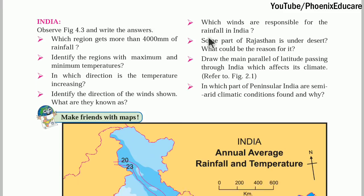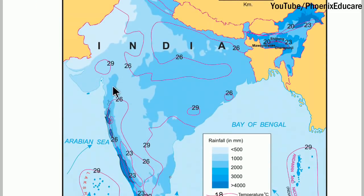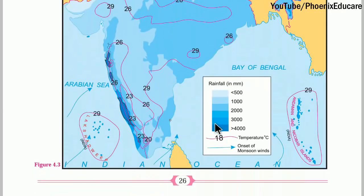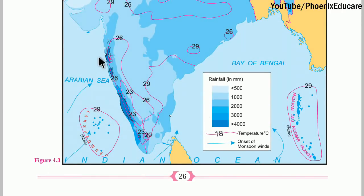If you see India, India is a peninsular region. Here we are having Bay of Bengal and here we are having Arabian Sea. India is getting rainfall from South-West monsoon winds. When the monsoon winds reach Kerala, there are two branches: one is the Arabian Sea branch and one is the Bay of Bengal branch.